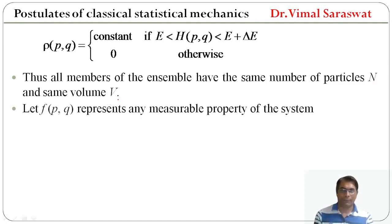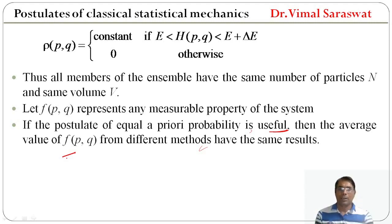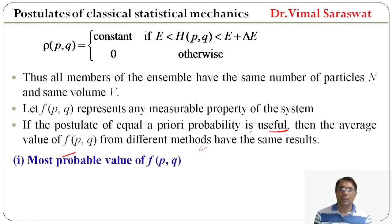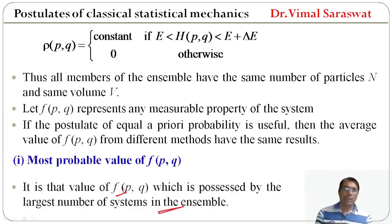Consider a function f representing any measurable property of the system, which is a function of momentum and coordinates. If the postulate of equal a priori probability holds, the average value of f obtained from different methods gives the same result. The first method is the most probable value of f, which is the value possessed by the largest number of systems in the ensemble.